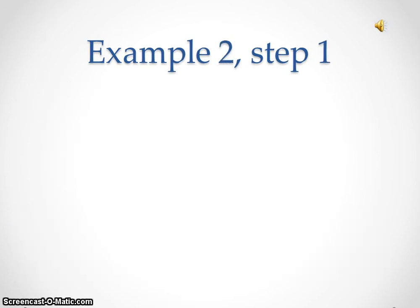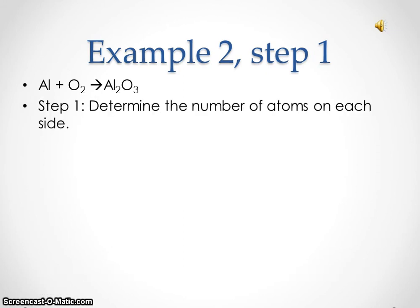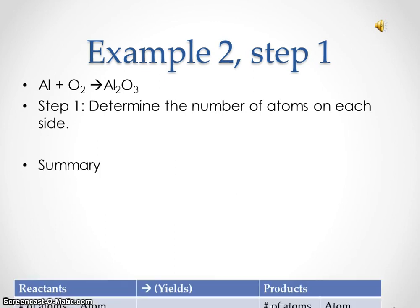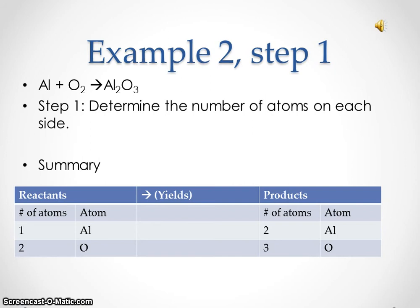Example two, step one. We have aluminum plus oxygen yielding aluminum three oxide. Step one: determine the number of atoms on each side. On the reactant side, we have one aluminum atom and two oxygen atoms. On the product side, we have two aluminum atoms and three oxygen atoms.